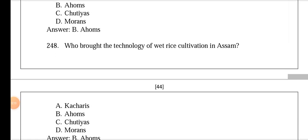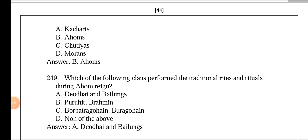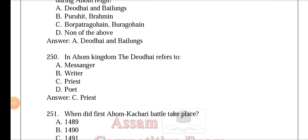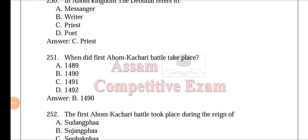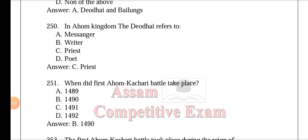Hinduism marked its first stage of growth in the Ahom dynasty during the time of Sudangfa. The Ahom dynasty used a dragon-engraved throne in Assam. The Ahoms also brought the technology of wet rice cultivation to Assam. The clans that performed traditional rites and rituals during Ahom times were the Deodhai and Bailungs. In the Ahom kingdom, Deodhai refers to the priestly class.